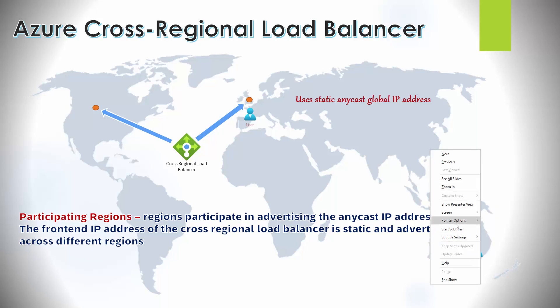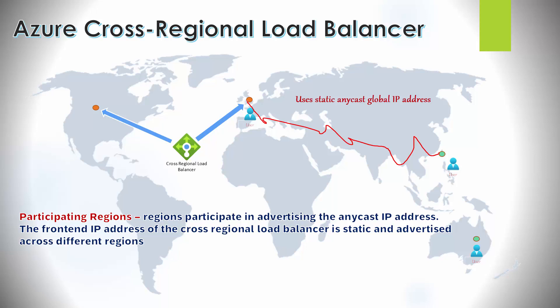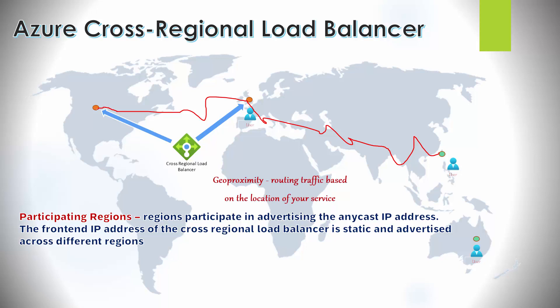The Microsoft Azure backbone network is a massive network that spans across the world connecting all the different Microsoft regions. This is key to why it's a very low-latency architecture - traffic is routed to the nearest region and then handled by Microsoft's backbone network. These participating regions advertise the IP address using the anycast protocol and route traffic over the Microsoft Azure backbone. The load balancing algorithm used is called geoproximity, and based on the entry point of the traffic, it routes to the closest regional deployment point.